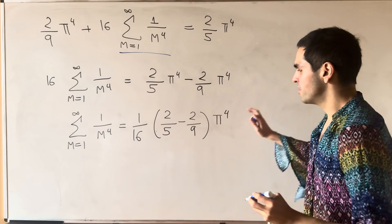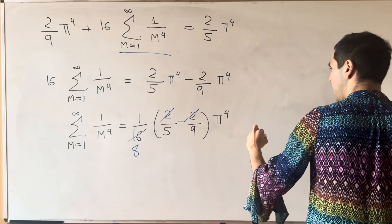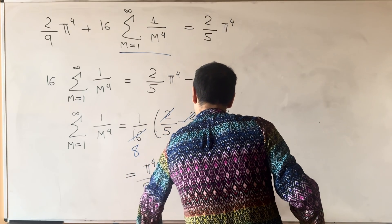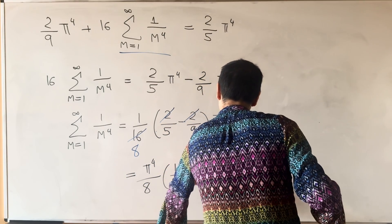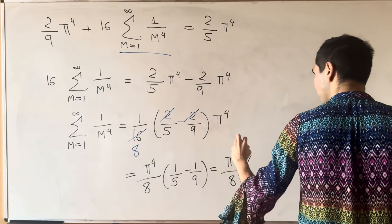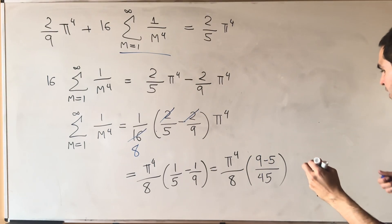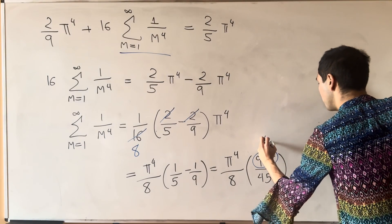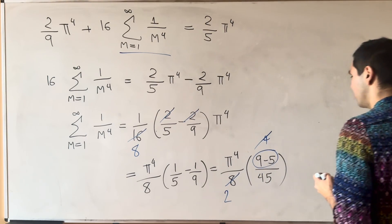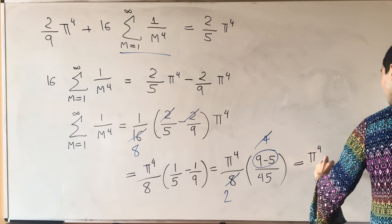Pi to the 4th the 2's cancel out with the 16 to get an 8, so we get pi to the 4th over 8, 1 fifths minus 1 ninths, and then we get pi to the 4th over 8, and then let's see 9 minus 5 over 45. And I think that simplifies so 9 minus 5 becomes 4 and the 4 cancels out with the 8 to get an extra factor of 2 and so in the end what is that sum? It's just pi to the 4th over 90.